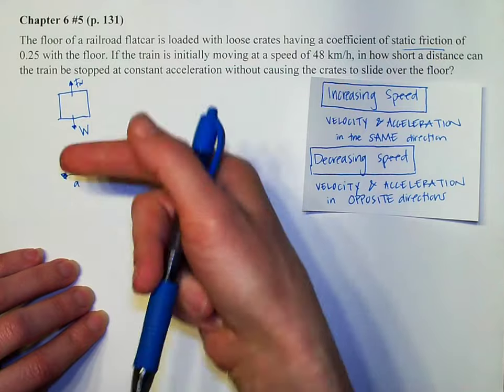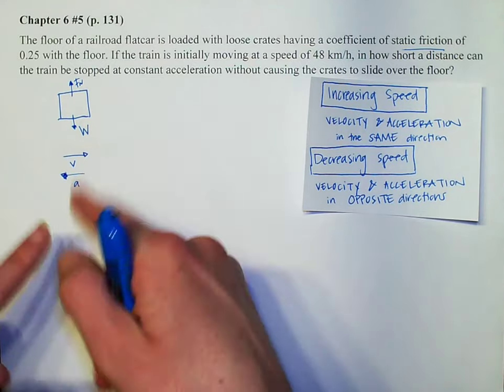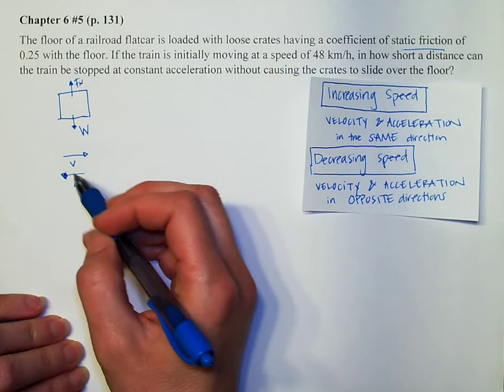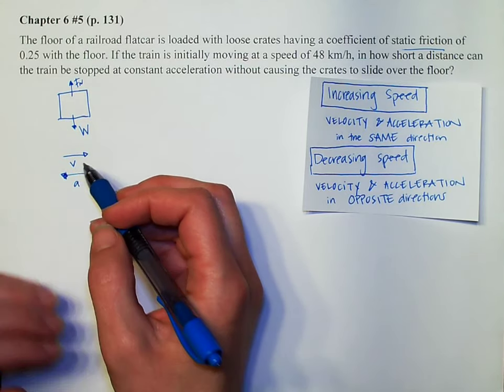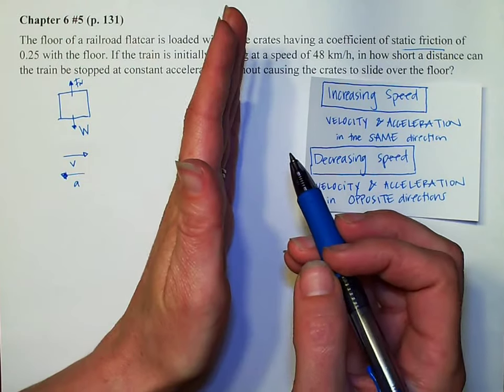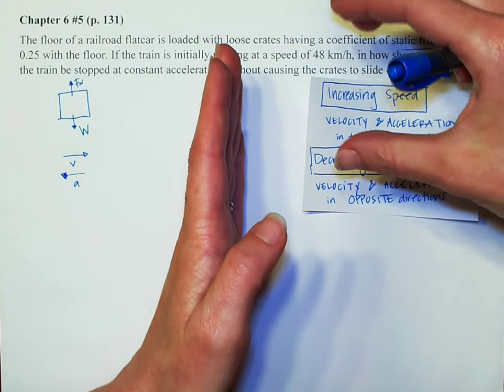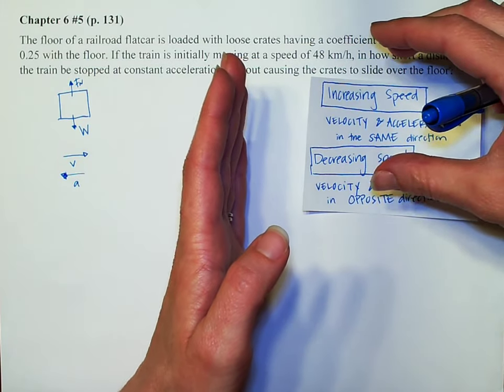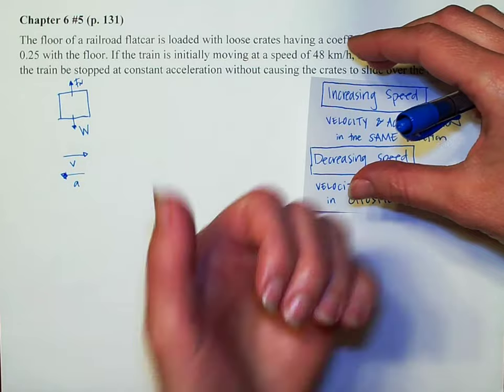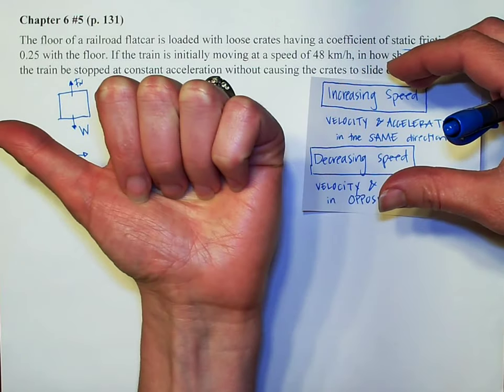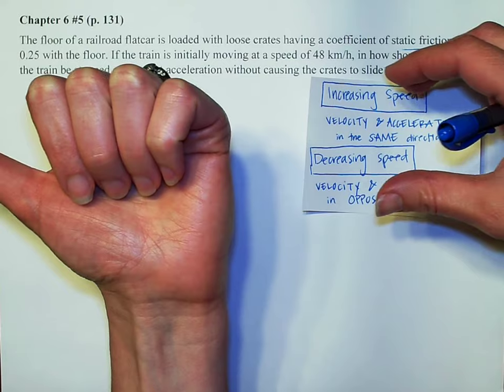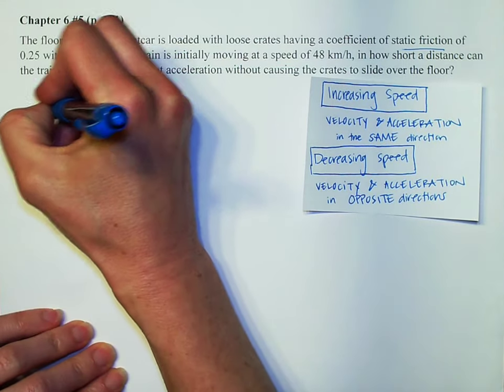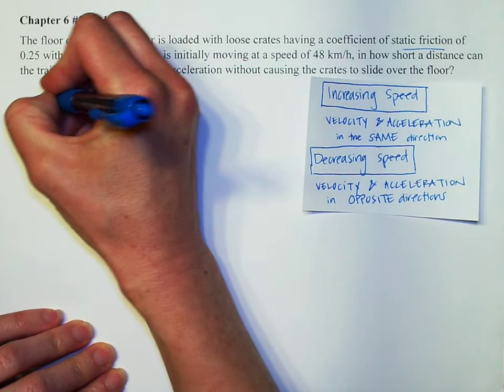You could have chosen to have your velocity go that way and your acceleration go that way. It doesn't matter. This is what I chose so I'm going to go with it. So if this is the case, then imagine that you're moving in this direction. Your crate wants to keep moving in that direction because of inertia. And so if you are stopping, then friction is going to be opposing that movement. So the friction will be pushing in the opposite direction of where that crate wants to keep going to. So my friction is in this direction.